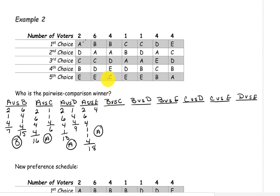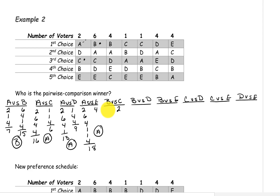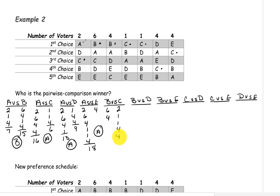Next we'll look at B versus C. On the first two, C is above B, so C gets those two. B is above C on the next six and on the four. Candidate C is above B on the next two, and also on the four, and on the last four. So candidate B has a total of 10 and candidate C has a total of 12, so C wins this pairing.